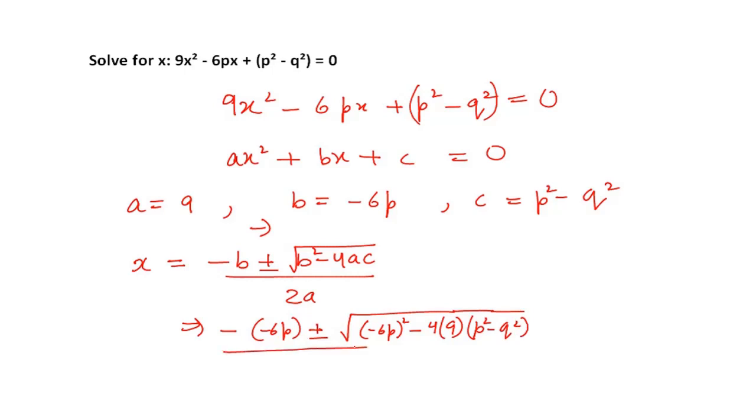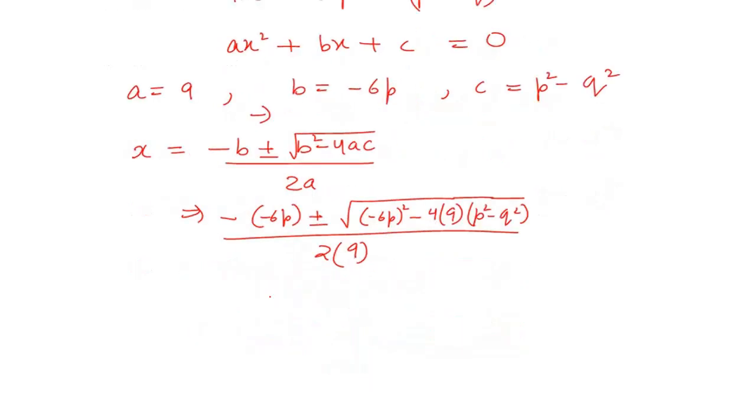Now let's try to reduce it so that we can get x. A has value 9. Minus and minus will cancel, so you will get 6p ± under root...